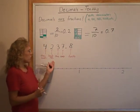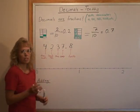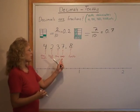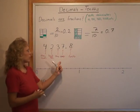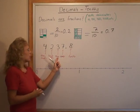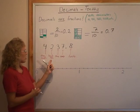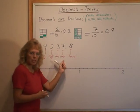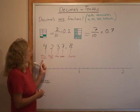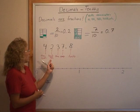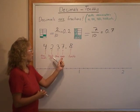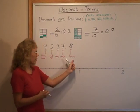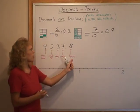Each one of these places differs by a factor of ten. When you go from ones to tens it's ten times as much, and if you go the other way it is one tenth of each place value. That's why from ones to here we go to tens — ten times as much.